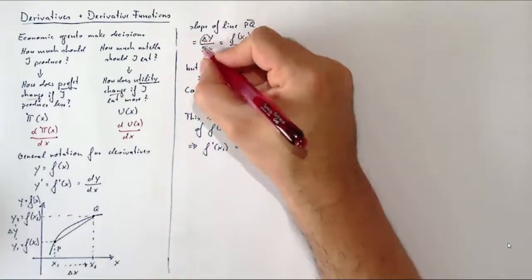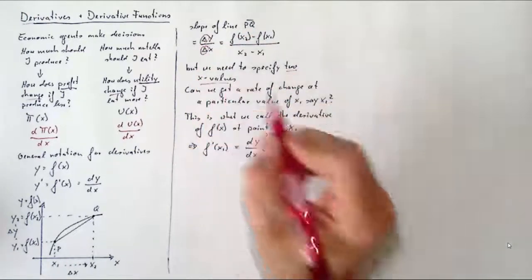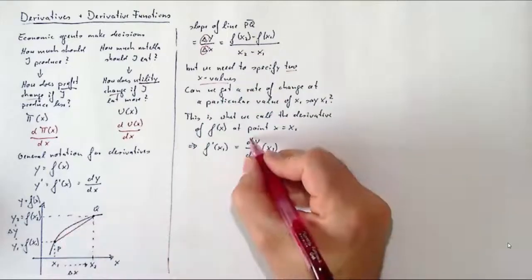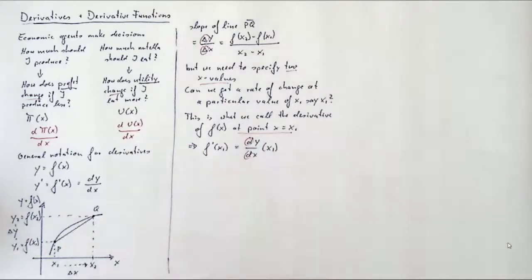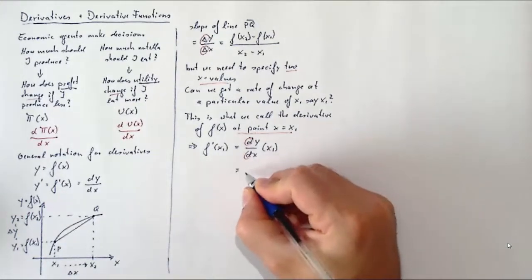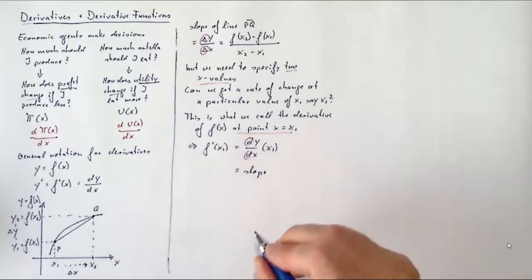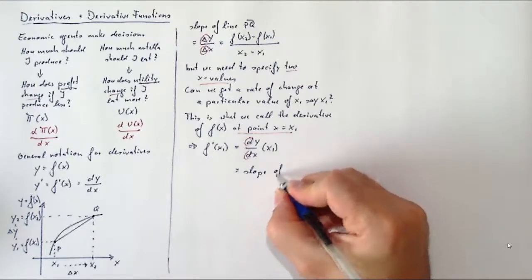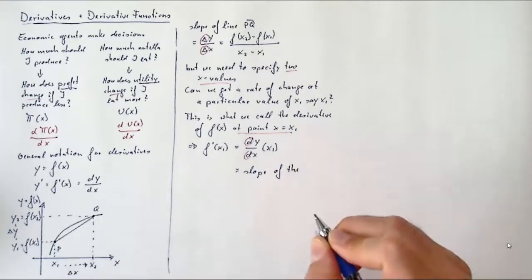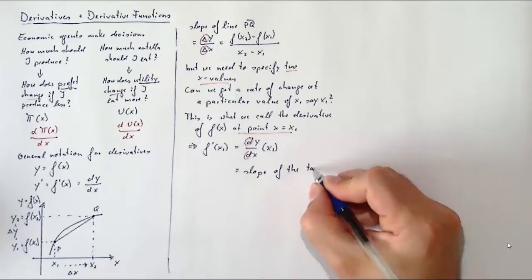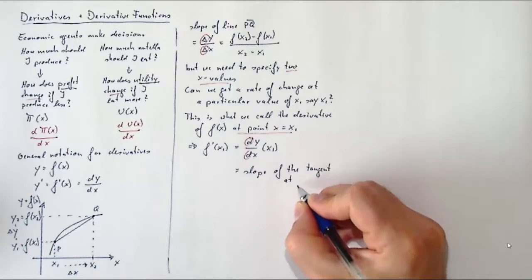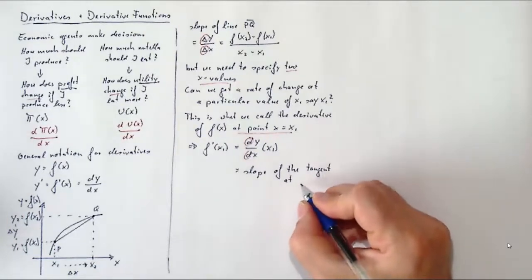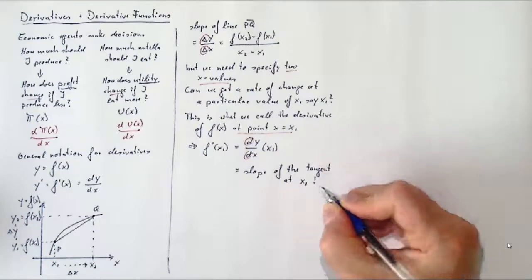In our previous graphical representation, when we looked at the difference between the increase between two points we called it delta. Now we use the d, indicating that we are looking at the rate of change at a particular point. So that's the difference between the d and the delta. Graphically, we will be looking at the slope of the tangent to the function at point P, or at the point of the function evaluated at x₁.